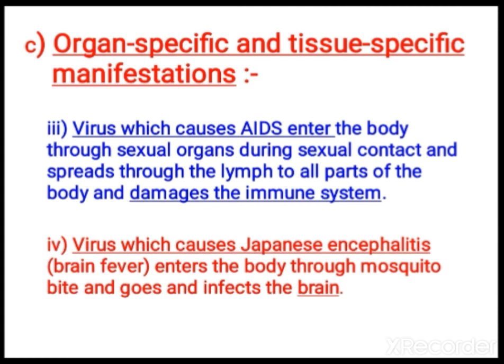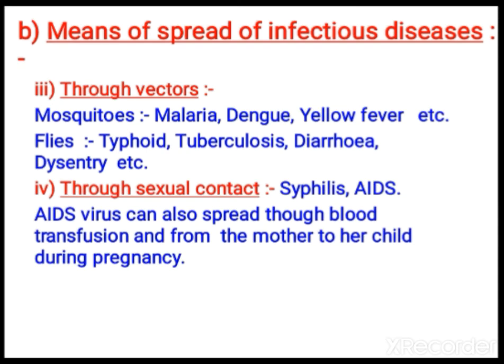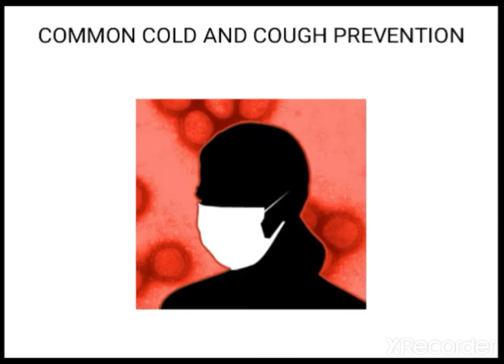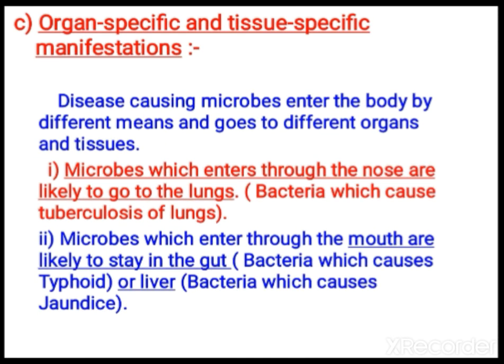Today we have covered organ-specific and tissue-specific manifestations, which can be asked as two or three mark questions using examples. The means of spread of infectious diseases — through air, water, vectors, and sexual contact — can also be asked for two or three marks with examples. Study all disease names and terms thoroughly, and complete the assignments given. Thank you, children.